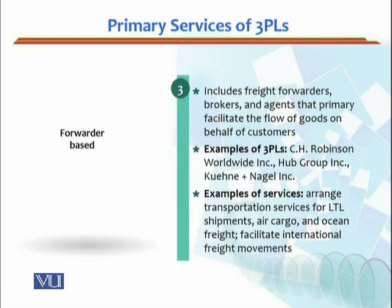Services provided include: they arrange transportation services for LTL shipments — that is less-than-truckload shipments — they consolidate shipments, handle air cargo, and ocean freight to facilitate international freight movements. For example, Kuehne+Nagel Pakistan mein bhi LTL shipment provide karta hai apne customers ko, is ke saath efficient routing bhi provide karta hai, aur agar international freight movement hai toh they also facilitate their customers in that respect.